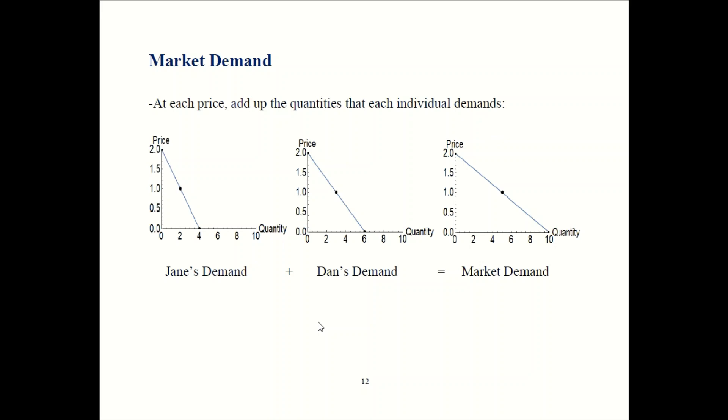That's how you add together the demand curves in the tables. You can also add the curves together graphically. For Jane, she bought zero when the price was two, she bought two when price is one, and four when price is zero. So this curve represents Jane's demand. Here is Dan. Dan bought zero when the price was two. He buys three when price is one and six when price is zero.